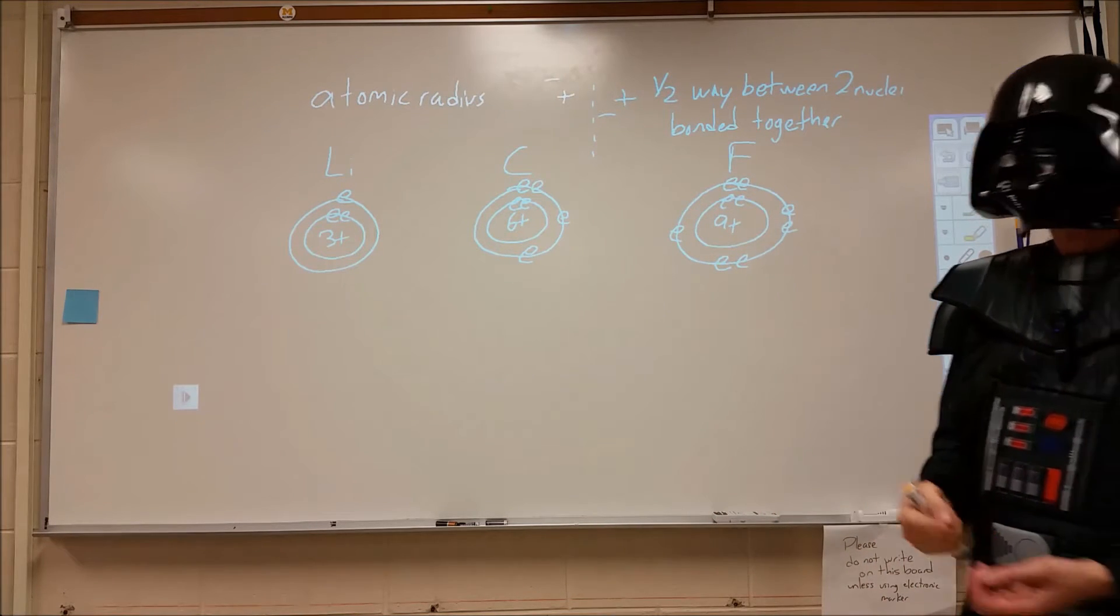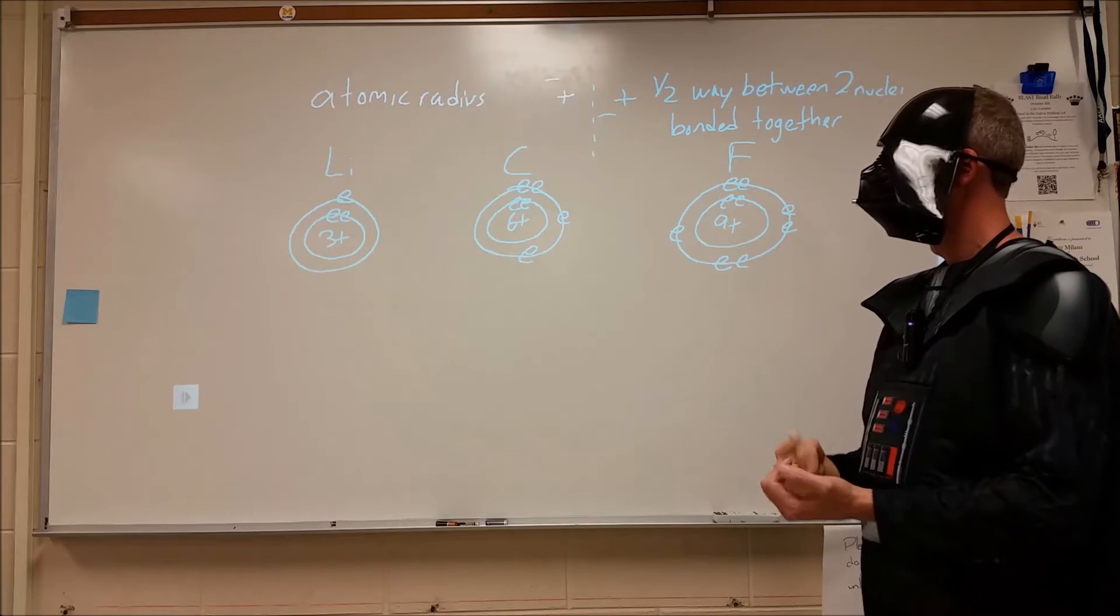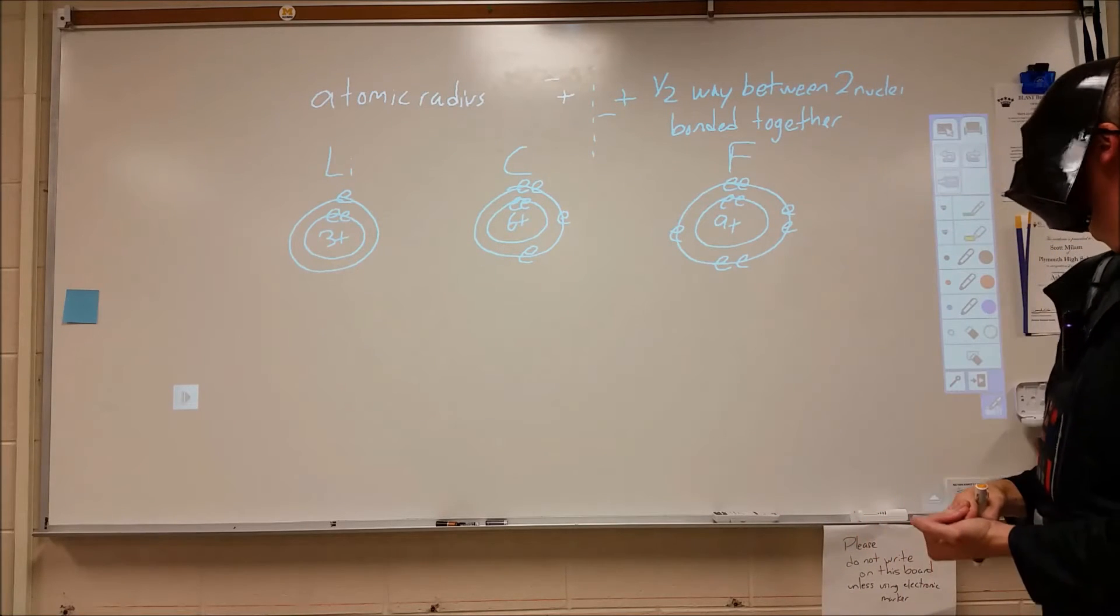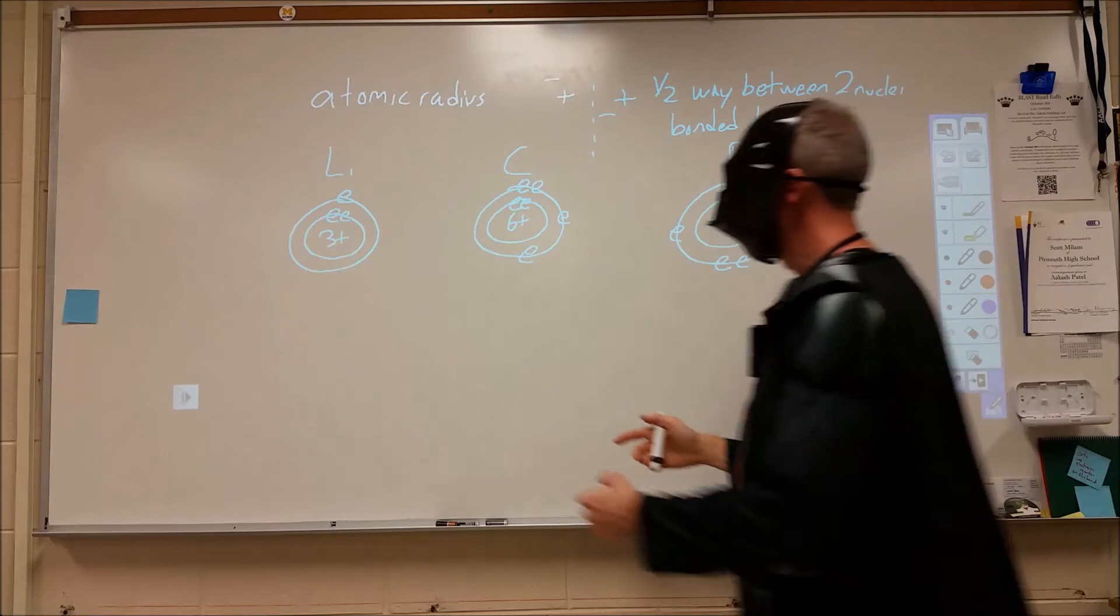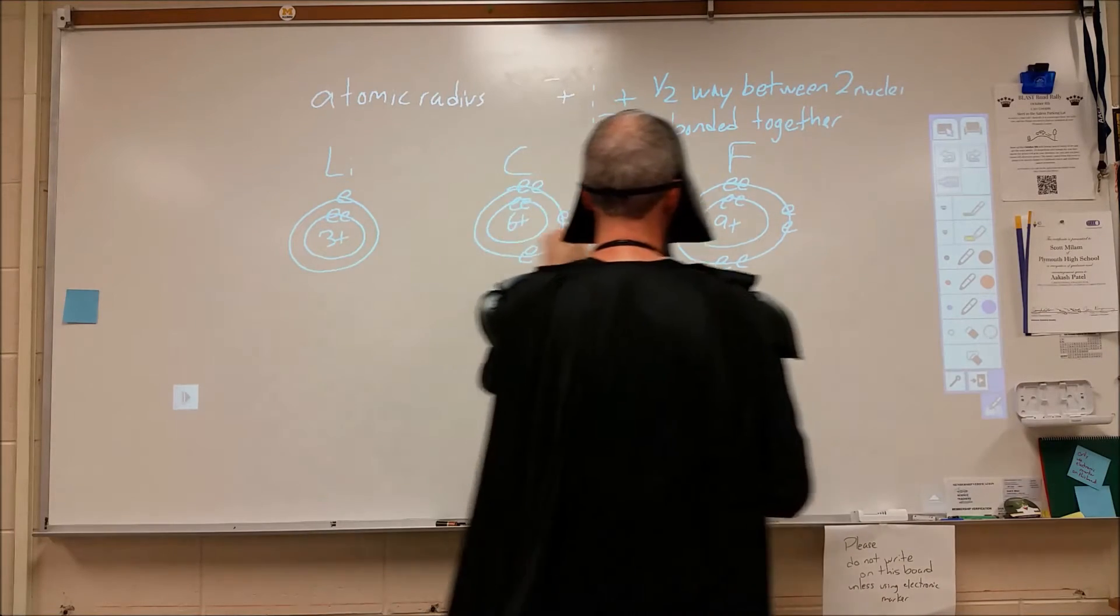We also want to be able to phrase it using our terminology of effective nuclear charge, energy levels, and/or shielding. So in this case, we look, and as we go with more protons from 3 to 6 to 9, we are increasing the pull on all these electrons.